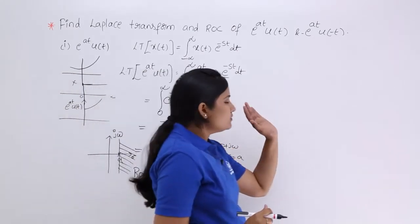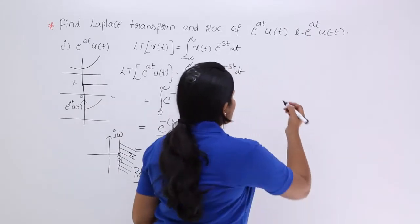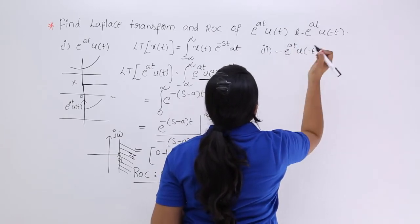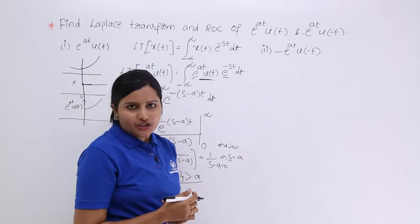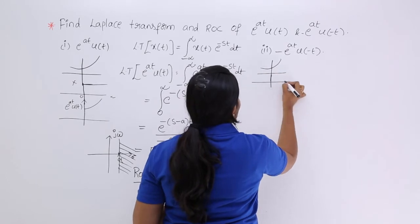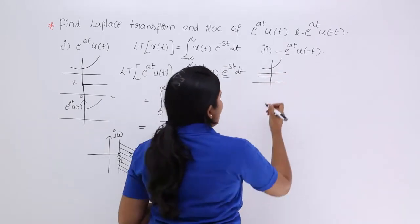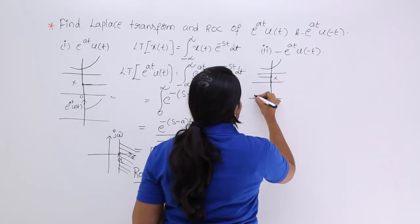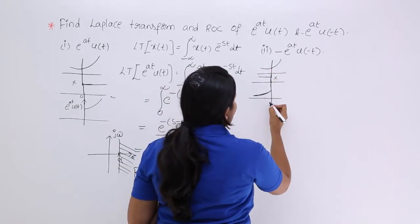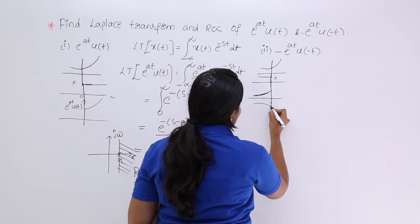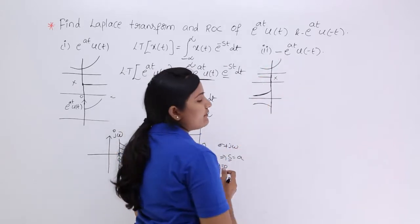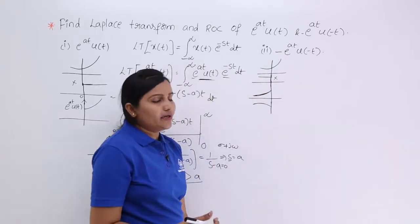Now we consider the second signal: -e^(at)u(-t). e^(at) is again a rising exponential, and u(-t) makes it left-sided. Multiplying them gives the decaying part of the rising exponential, and with the minus sign, we get the mirror image. So this is -e^(at)u(-t).